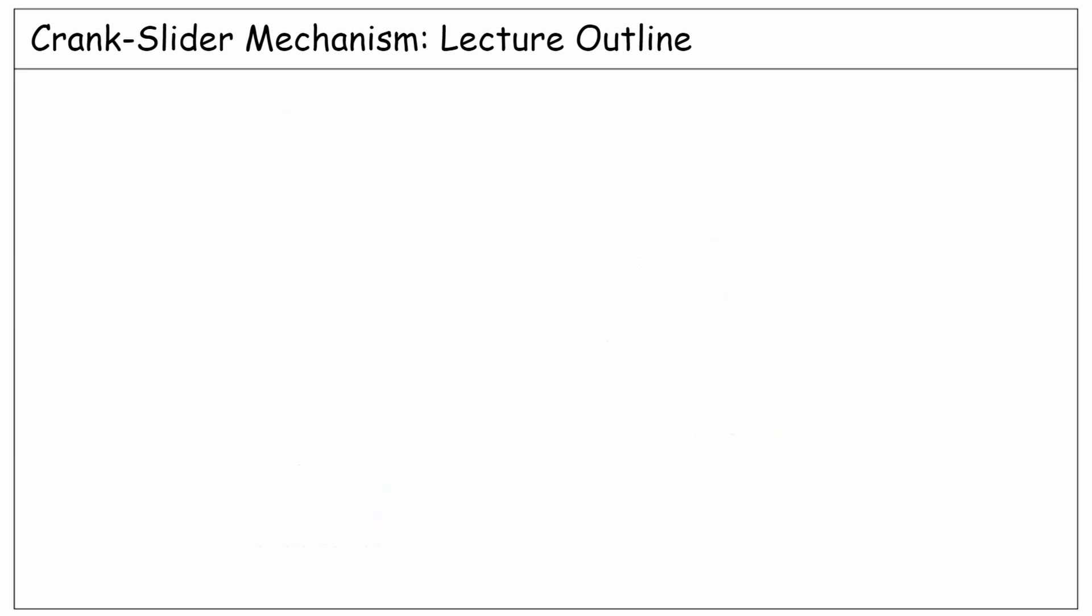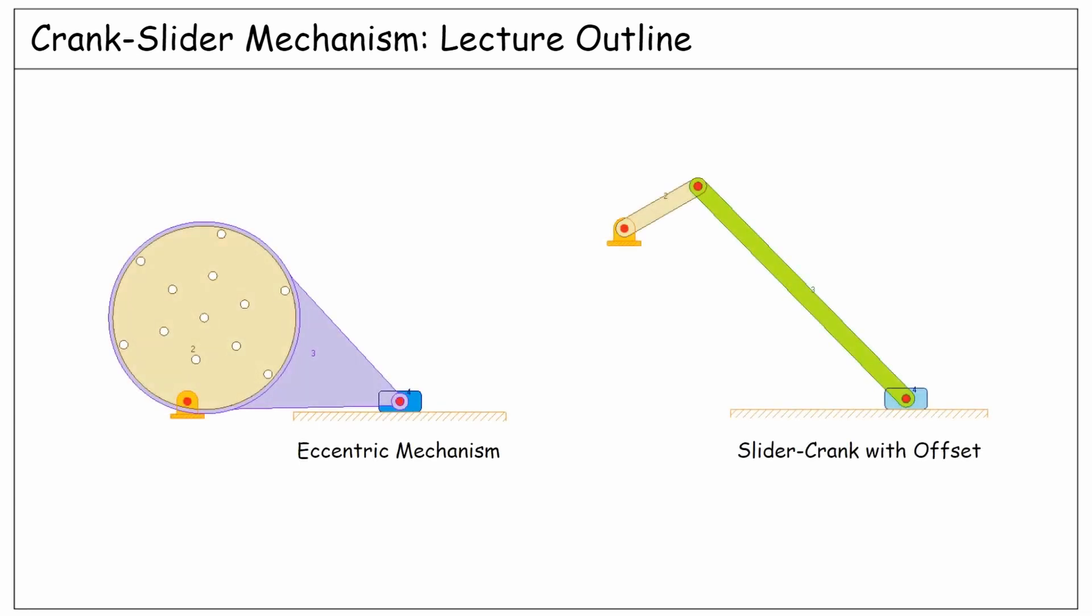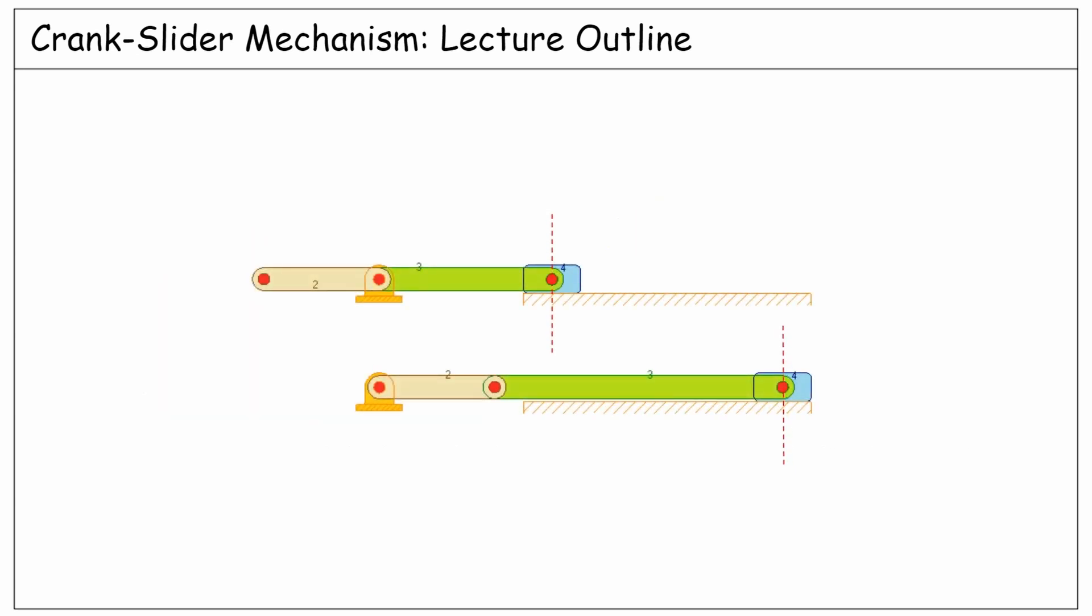Next, we will study some of the modifications of this linkage, such as the eccentric mechanism, as well as the slider crank with offset. And finally, we will learn how to compute the distance between the dead centers of this mechanism, known as the stroke.